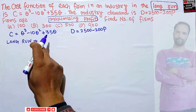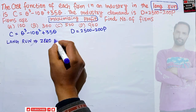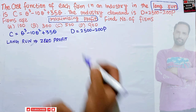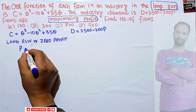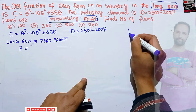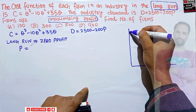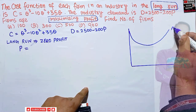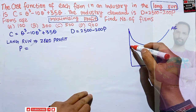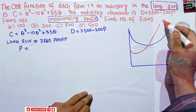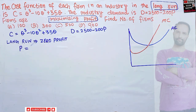In the long run, the firm will earn zero profit. So in the long run, the firm earns zero economic profit. That means the price will equal the average total cost. Let me draw a diagram to make it more sensible. We have the average total cost curve and also the marginal cost curve.